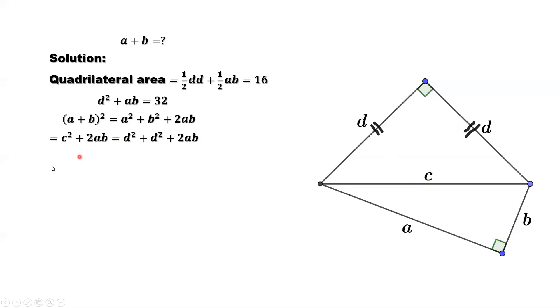Simplify this part. We have 2d² + 2ab. We can factor 2 out: equals 2 times (d² + ab).